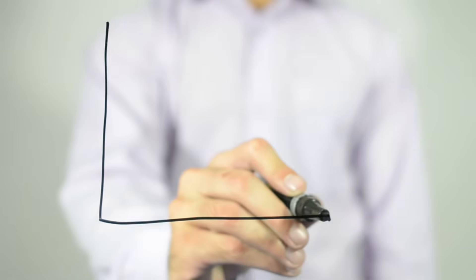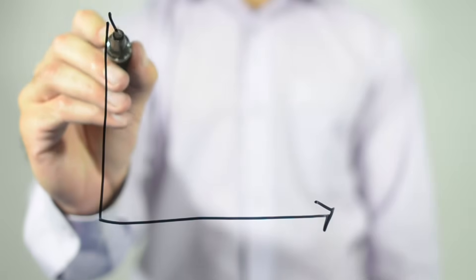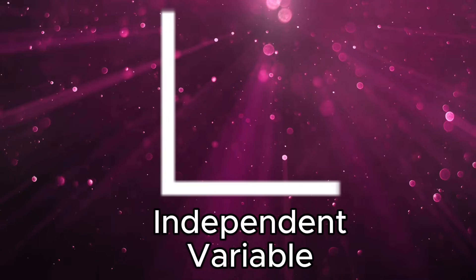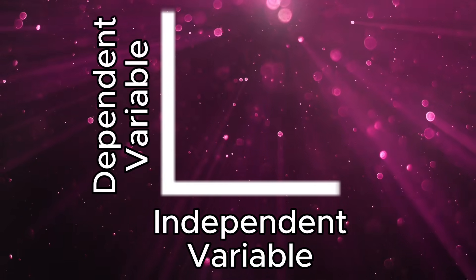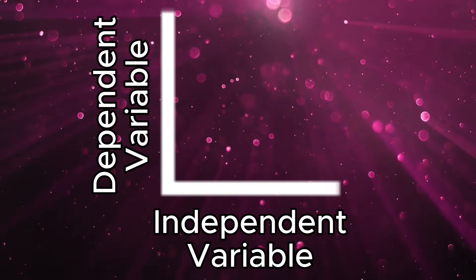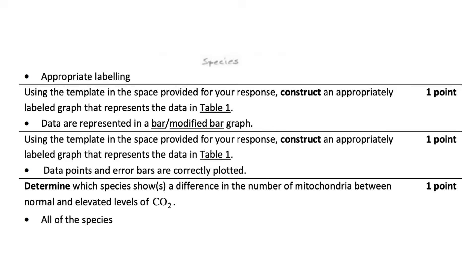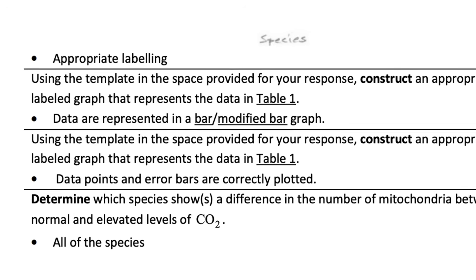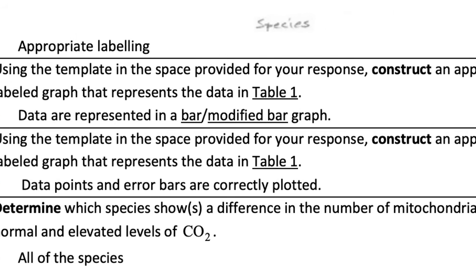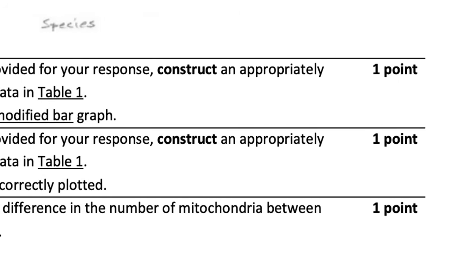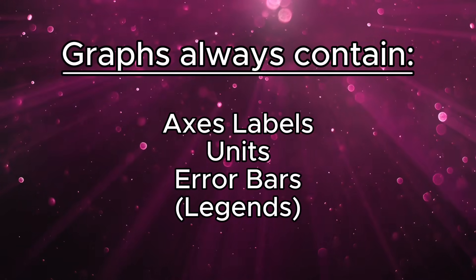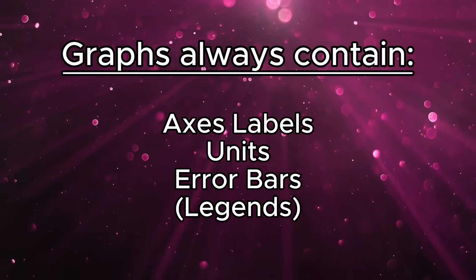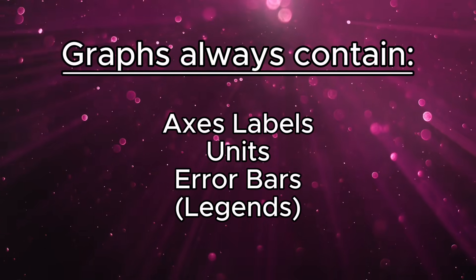Whether you're creating a bar graph or a scatter plot, you'll be working with the XY coordinate system. In all circumstances, you'll be labeling the X-axis with your independent variable, while the Y-axis would contain your dependent variable. Graders of the exams are specifically asked to check for certain features — we have to make sure that we're putting in both the axis labels as well as the units, if applicable. Missing one or the other will cost you some points.